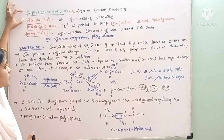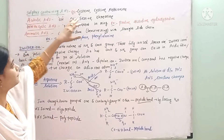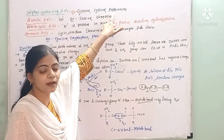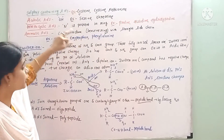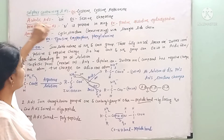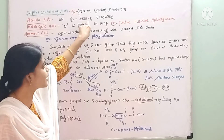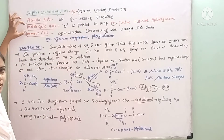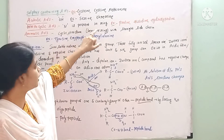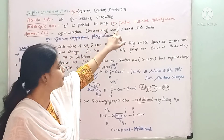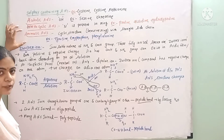Sulfur-containing amino acids contain sulfur; examples are cysteine and methionine — these examples are very important. Alcoholic amino acids consist of a hydroxyl group; examples are serine and threonine. Heterocyclic amino acids contain nitrogen present in a ring; examples are proline, histidine, and hydroxyproline.